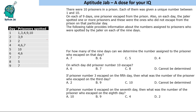So there are 10 prisoners and on 9 days, 9 prisoners escaped. The jailer spots some prisoners every day, and those are the prisoners who had not escaped on that day — so they did not escape.